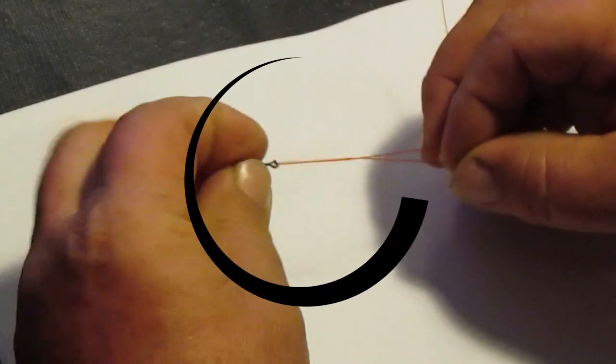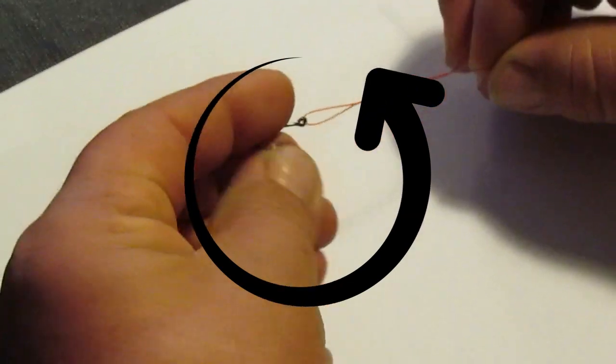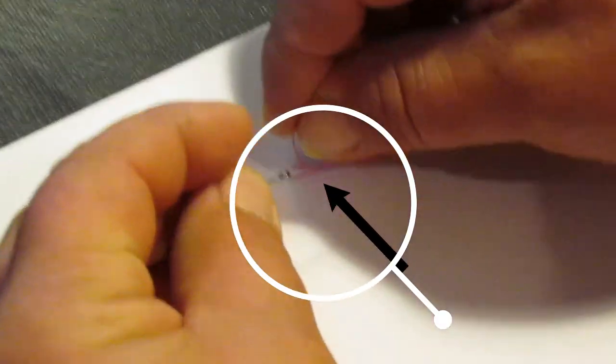You can do five, six, seven times, whatever you want. And then you see a little loop by the eyelet—we're gonna put our tail through that little loop right there by the eyelet, just like a very simple barrel knot.